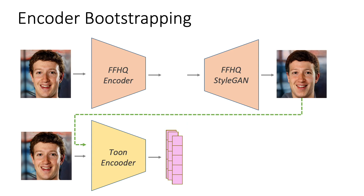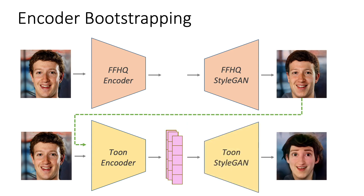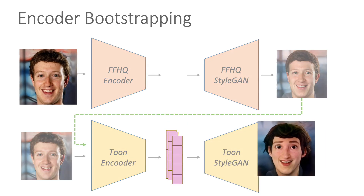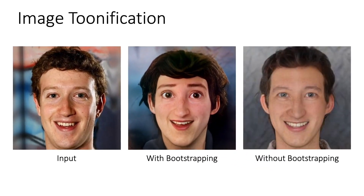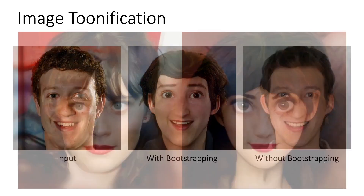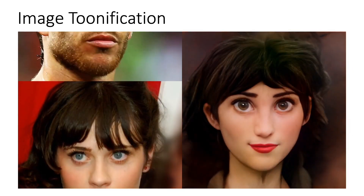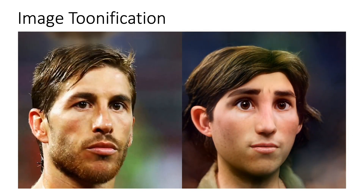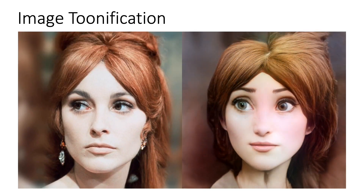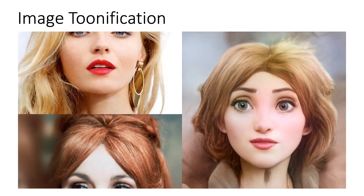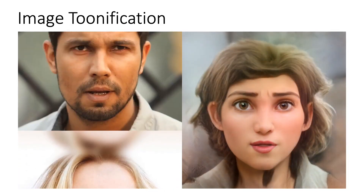By passing this code to a toonify StyleGAN generator, we obtain our final translated toon image. As we can see, this bootstrapping technique results in an image that is able to better capture the input identity and toonify style. And as before, we can leverage StyleGAN to generate smooth interpolations within the toonify latent space.